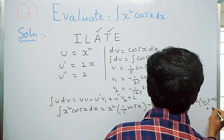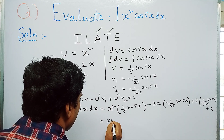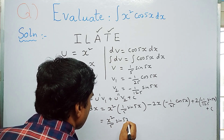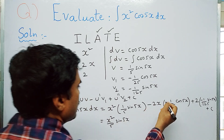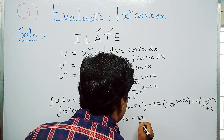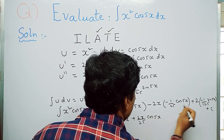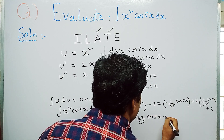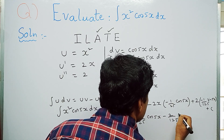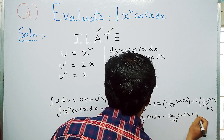Simplifying — noting that minus times minus gives plus, and plus times minus gives minus — the final result is (x²/5)sin 5x + (2x/25)cos 5x − (2/125)sin 5x + C. This is the final solution.